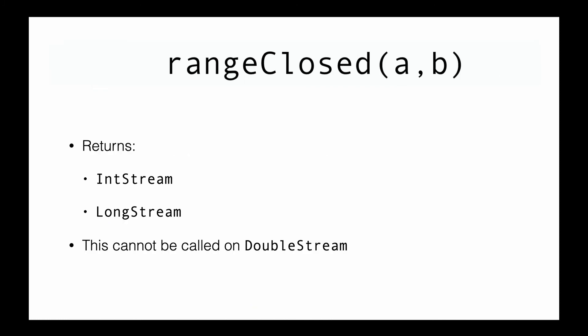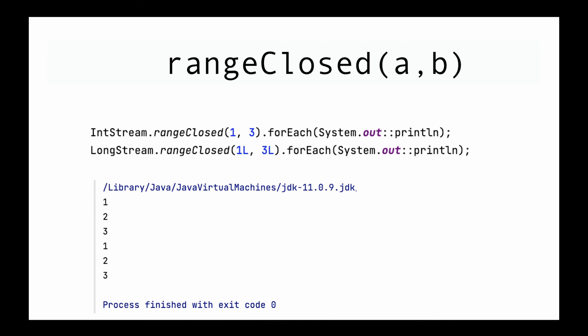The next method is rangeClosed. The functioning of rangeClosed is exactly the same as range, with the only difference being that b is also included in the stream that is created. In this example, I'm calling rangeClosed instead of range with the exact same parameters for IntStream and LongStream, and this time 3 will also be included in the output.